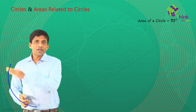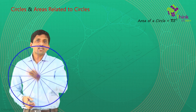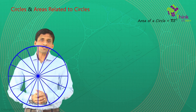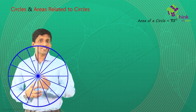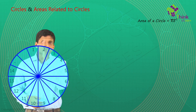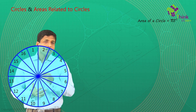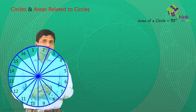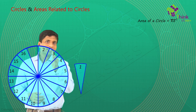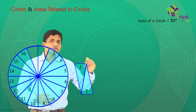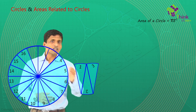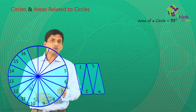Just to recap — you take a circle, cut it into multiple sectors using diameters. Let's take 16 sectors, and number them 1, 2, 3, 4, up to 16. Now take each sector one by one: take the first sector and keep it upright; take the second sector, make it upside down, and keep it next to each other. Third one upright, fourth one upside down.